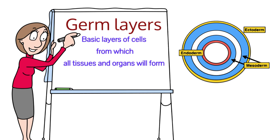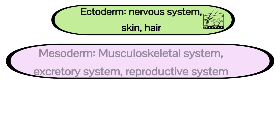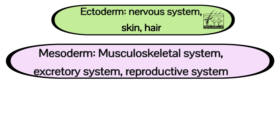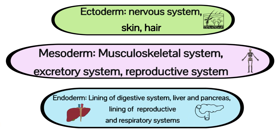Starting from the outside: ectoderm, mesoderm, endoderm. The ectoderm gives rise to the nervous system, the skin, and the hair — the skin was particularly asked in exam questions a few years ago. The mesoderm, the middle germ layer, gives rise to the musculoskeletal system, the excretory system, and the reproductive system. The endoderm gives rise to the lining of the digestive system, the liver and the pancreas, and the lining of the reproductive and respiratory systems.